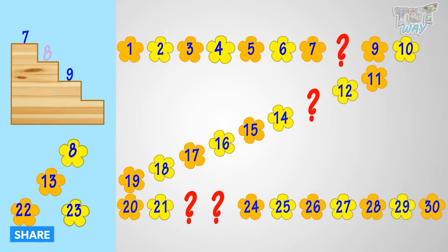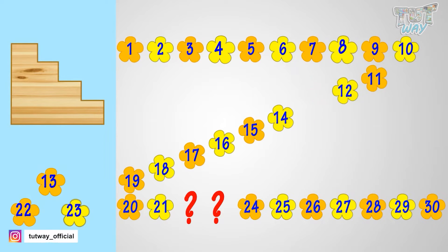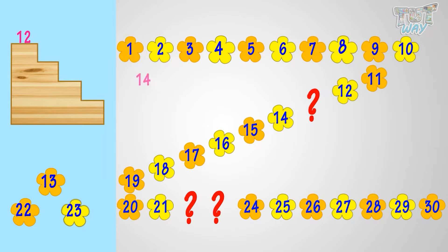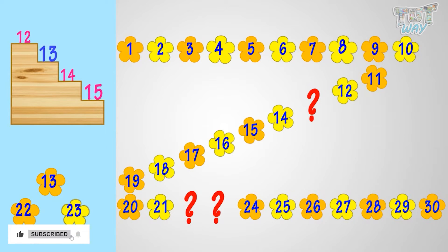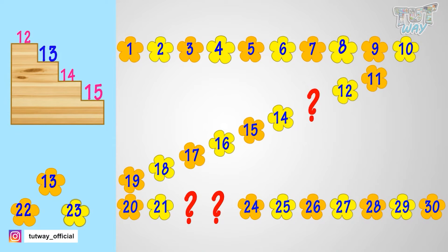8 comes before 9, so we will place the flower with number 8 at this place. Now let's find out what will come here. We can find the number that comes after 12, or a number that comes before 14. For a number that comes after 12, count forward: 12, 13, 14, 15. Yeah! 13 comes after 12. And for a number that comes before 14, count backward: 14, 13, 12. Yeah! 13 comes before 14.